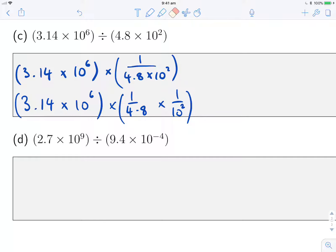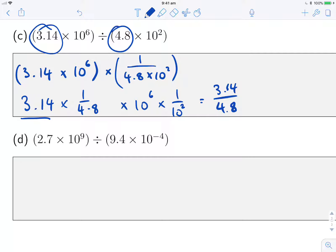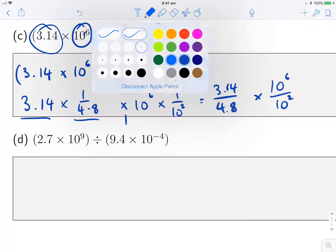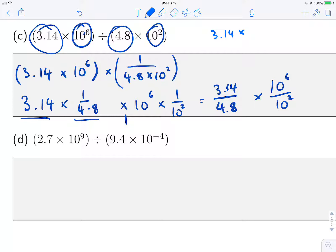Now once I've done it in that way, then I don't need these brackets anymore and I'm also allowed to rearrange. So I can move this 10 to the 6 over here. And so what it essentially becomes is I've got my first number divided by my second number, so that's 3.14 times 1 over 4.8 times, and then I've got my first power, the 10 to the 6, divided by my second power, my 10 to the 2. So you can think of it in this way. The other way that we could get here is just express the division in terms of fractions, and then this also splits out in this same way because of how we multiply fractions.